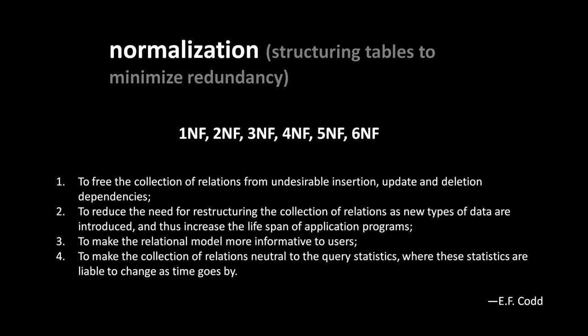The way E.F. Codd expressed these benefits is fairly academic, but I can translate quickly. First, to free the collection of relations from undesirable insertion, update, and deletion dependencies. The gist of that one is that if you follow the rules of normalization, you're removing redundancies in your data — you don't have the same facts expressed more than once — such that when we add new entries into these tables, remove entries, or modify an entry, we don't have to do it in multiple different places. If we're updating just one single fact in our database, it just exists in one place.